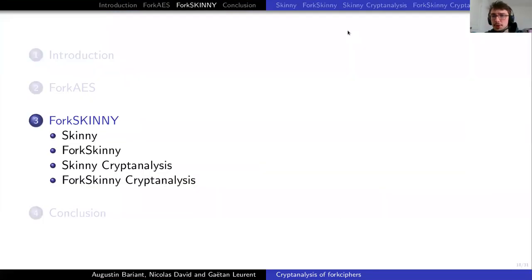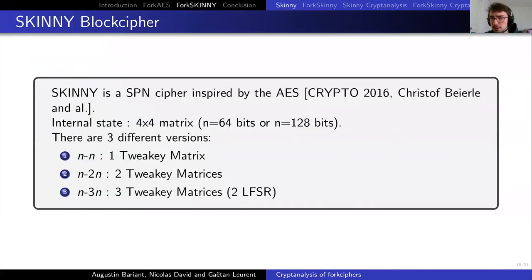We now move on to another section focused on ForkSkinny cryptanalysis. ForkSkinny is based on the block cipher Skinny, which is an SPN cipher inspired by AES and first introduced in Crypto 2016. Its internal state is represented by a 4x4 matrix, which is either 64 or 128 bits. There are three different versions of ForkSkinny: ForkSkinny-N-N, ForkSkinny-N-2N, and ForkSkinny-N-3N. All these versions differ from the size of the tweaking material compared to the internal state.